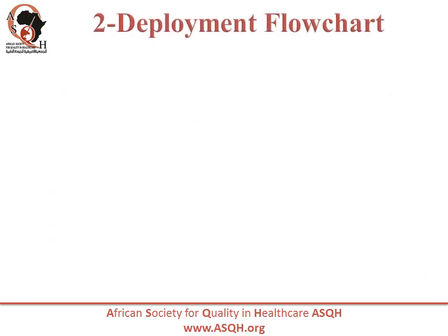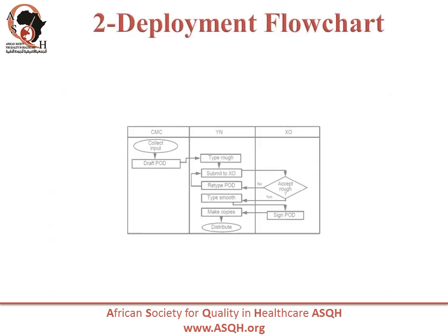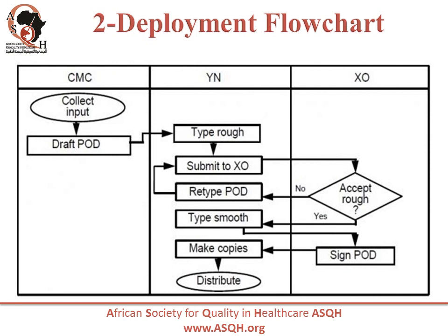Second type is the Deployment Flowchart. A deployment flowchart shows actual horizontal lines that define customer-supplier relationships, process flow, and identifies the people or groups involved at each step. This type of chart shows where the people or groups fit into the process sequence and how they relate to one another throughout the process.